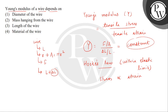So, Y will not depend on the diameter, nor on the mass hanging from the wire, nor on the length of the wire. It depends on the material of the wire — specifically, what the atomic structure is like, what the strength of interatomic forces is, and what the interatomic distances are. So the correct answer is option number four. Thank you.